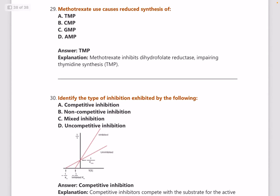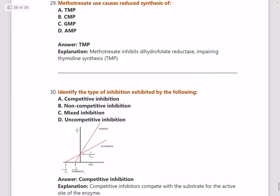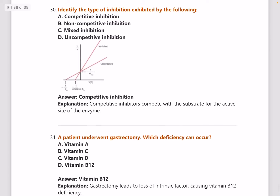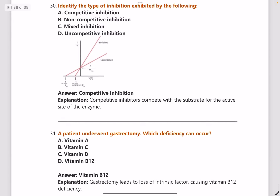Next: methotrexate use causes reduced synthesis of dTMP — that is thymidine synthesis. Next: identify the type of inhibition from a graph. This is very important — one simple trick is that if the graph shows a crossover (at x-axis), it is competitive inhibition; if there is no crossover, it is non-competitive.